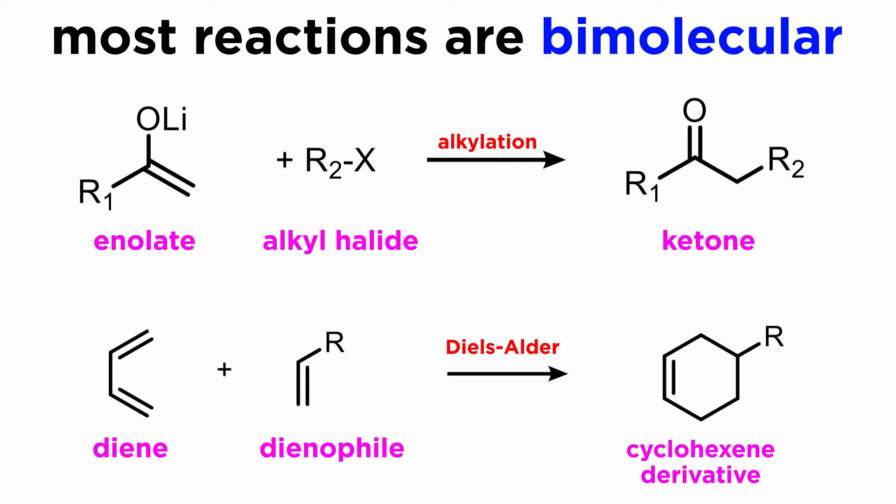Another example is the Diels-Alder reaction, where a diene and dienophile combine in a single step to give a cyclohexene derivative.